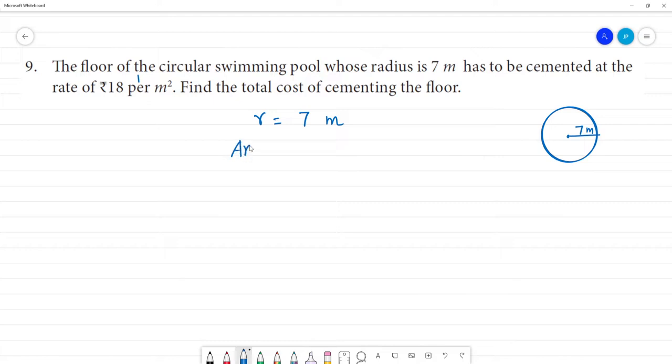Area is equal to πr² that is equal to 22 by 7 multiplied by 7 square, 7 into 7. Meter into meter is meter square.